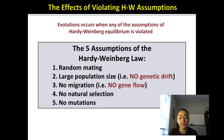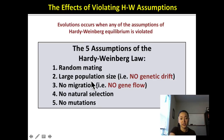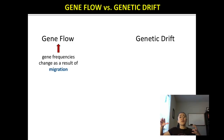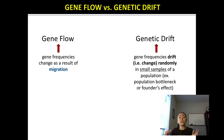Objective 3 covers gene flow effects on gene frequencies; Objective 4 covers genetic drift. A common mistake is mixing up the two. Genetic drift is about population size — the effects of a small population. Gene flow is about migration. Two examples of genetic drift are population bottleneck and founder's effect.